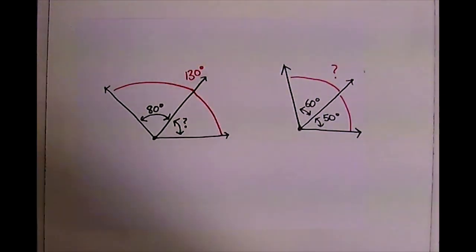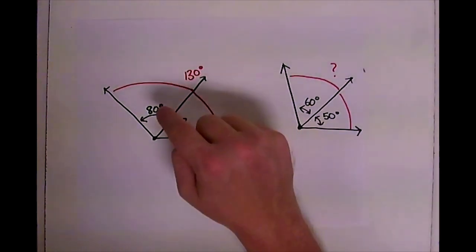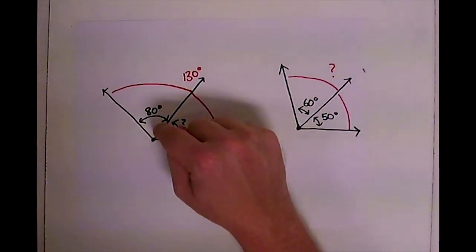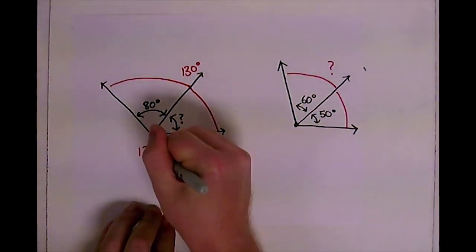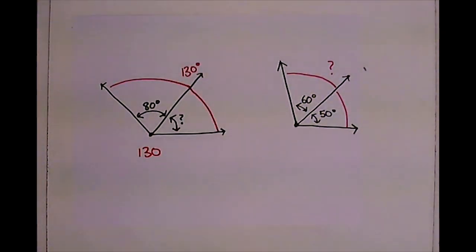So we're trying to figure out what's the difference between the total and the amount that they give us and that's going to give us the answer to our problem. So we're going to take the 130 and we're going to take the 80.